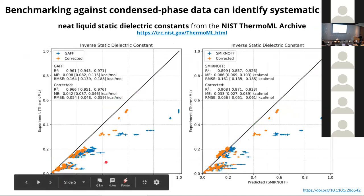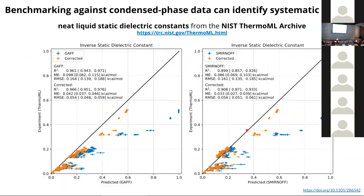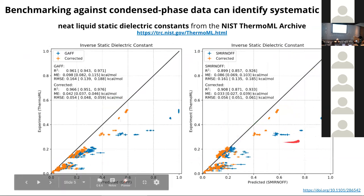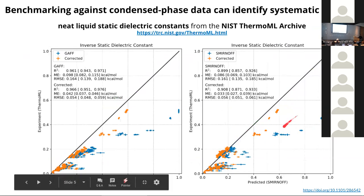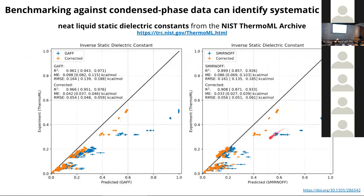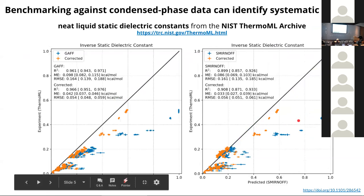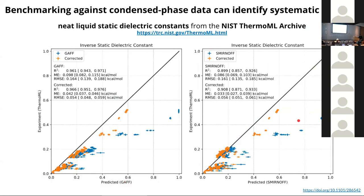We also identified other systematic issues with dielectric constants. These are inverse dielectric constants, which highlight the way in which errors are introduced into interaction energies of different molecules. Certain force fields like Smirnoff have very poor reproduction at very low dielectrics, which may cause problems in reproducing things like transfer free energies into low dielectric media. This is something we can improve by using dielectric data.